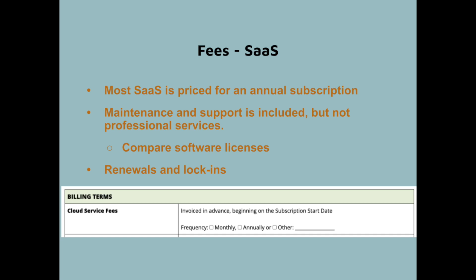For SaaS fees, most software as a service is priced as an annual subscription, though payments may be broken into monthly or quarterly installments. Maintenance and support is almost always included, but not professional services, which are usually costed out separately. SaaS is usually an all-in price based on the units you're charging for. You also need to figure out renewals and lock-ins. Customers will want to fix their fees, get most favored nation pricing, or cap fee increases — especially now with more inflation — whereas vendors want flexibility to change prices going forward.